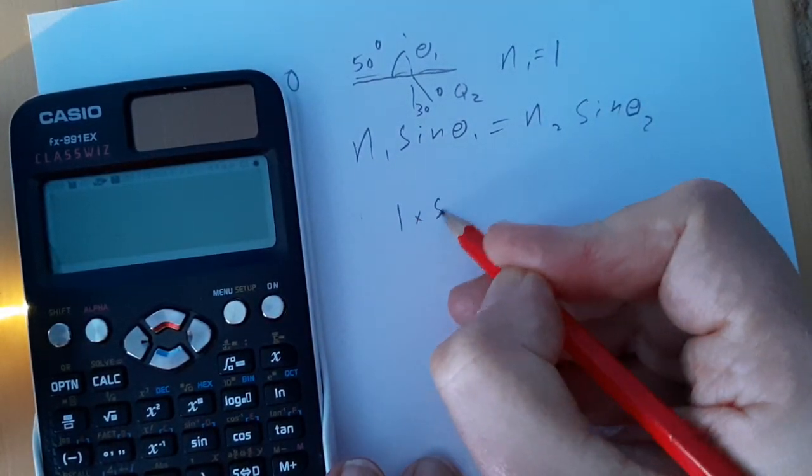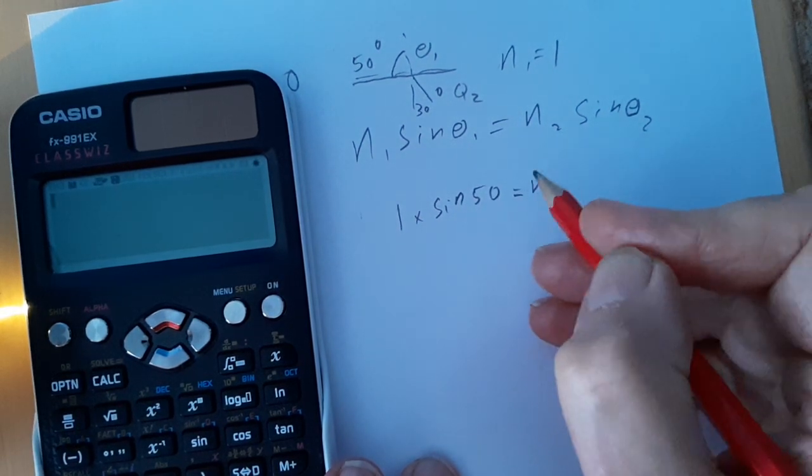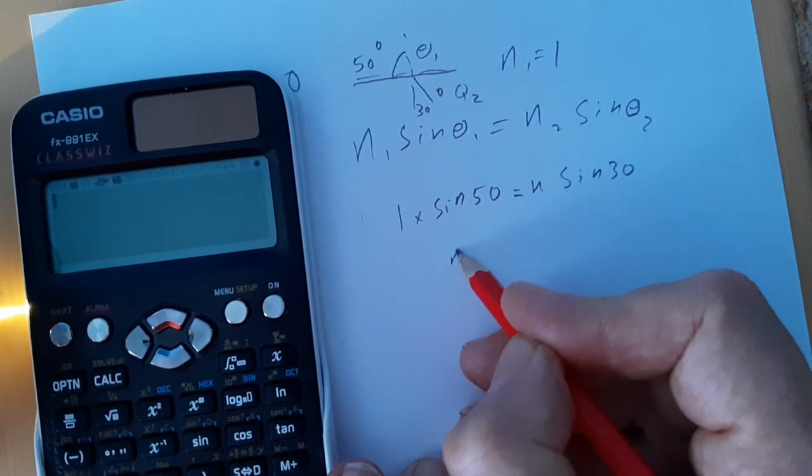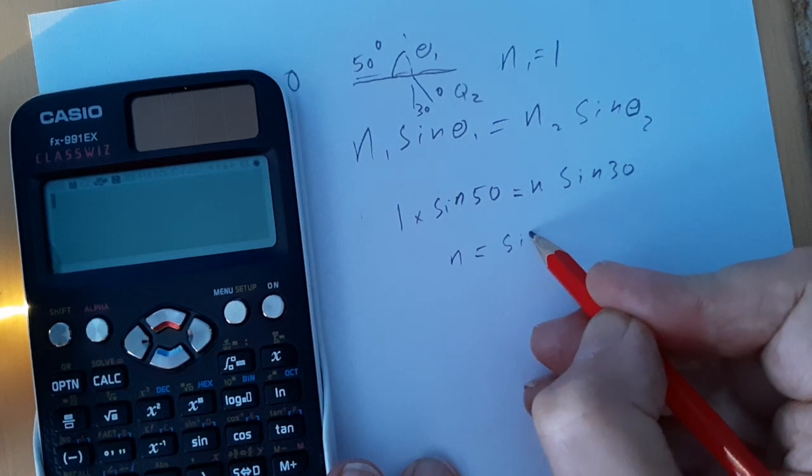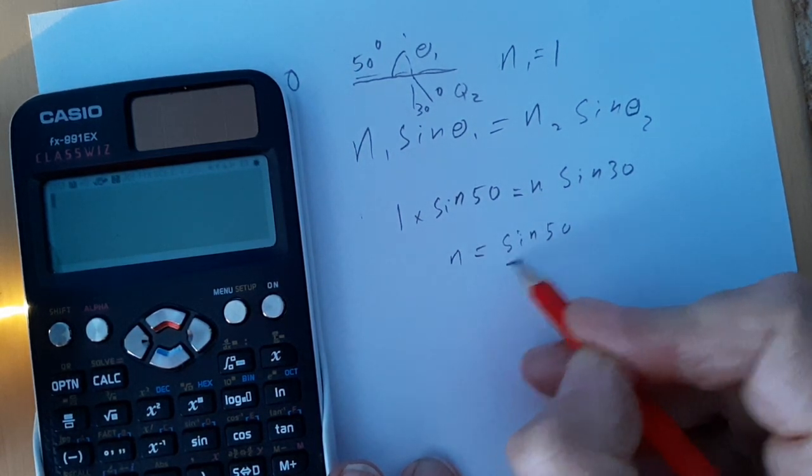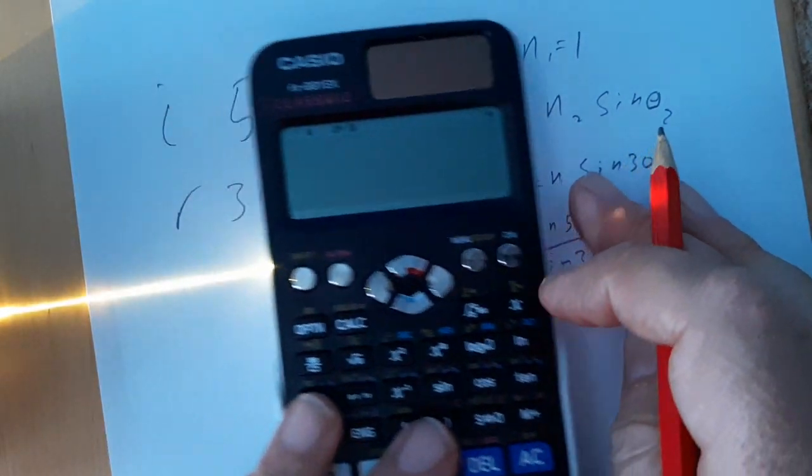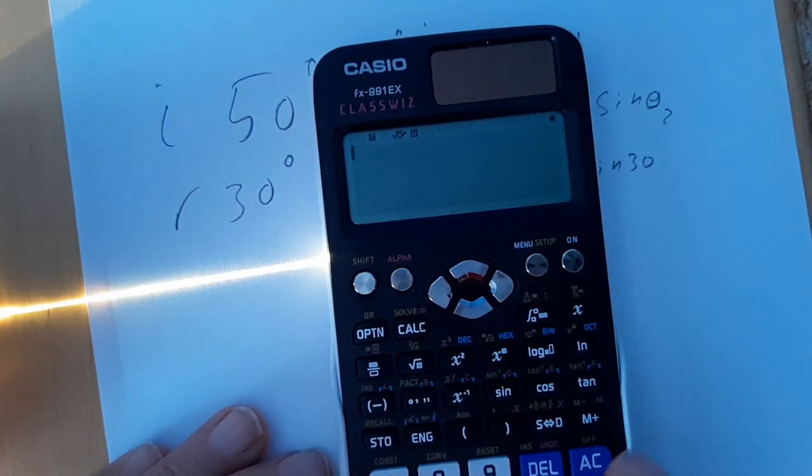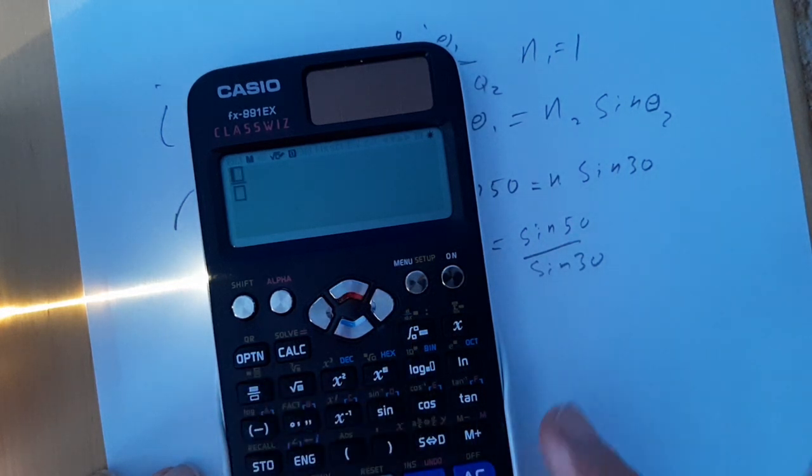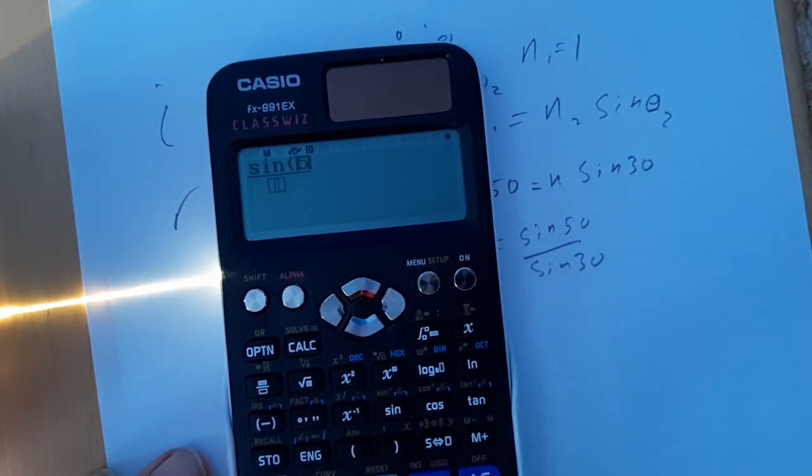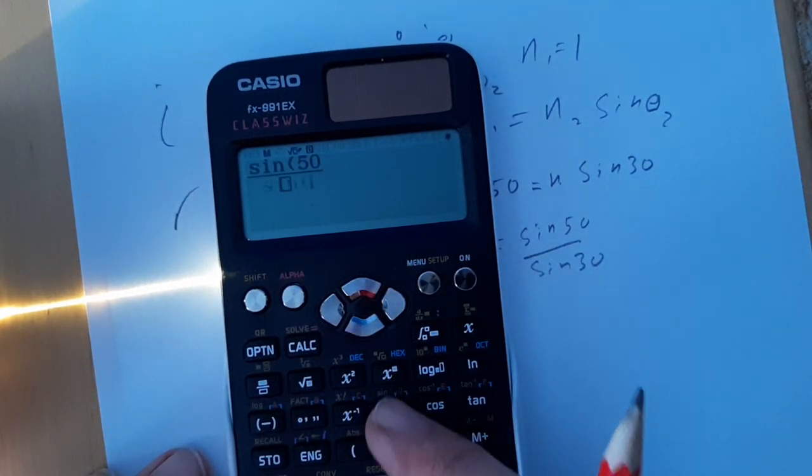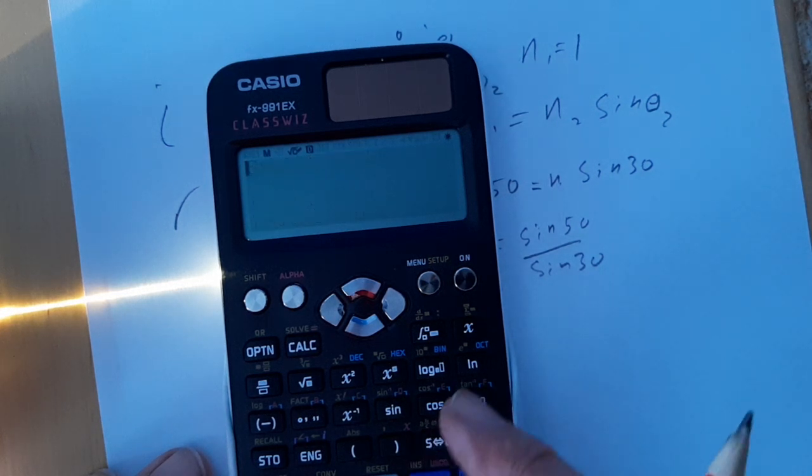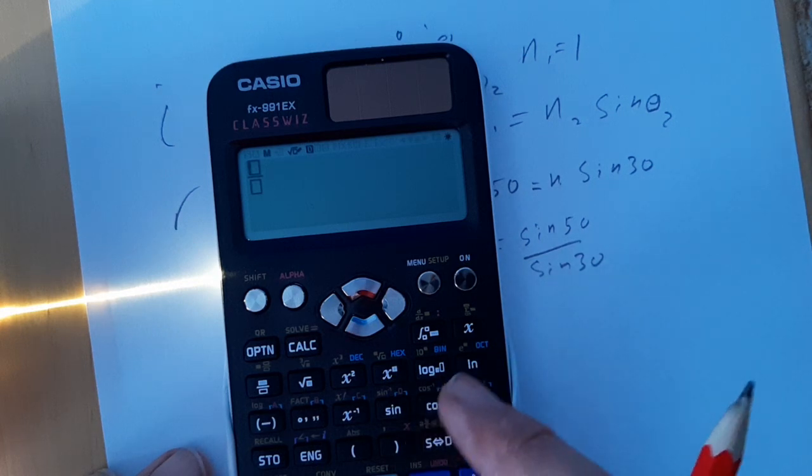So, we've got 1 times sin 50 equals N, the unknown refractive index, times sin 30. So, N is going to be sin 50 over sin 30. Bring the calculator over, just checking it's in degrees before we go any further. So, I just need sin 50 over sin 30. And that is equal to a syntax error. How absolutely marvelous. Let's just try that again.